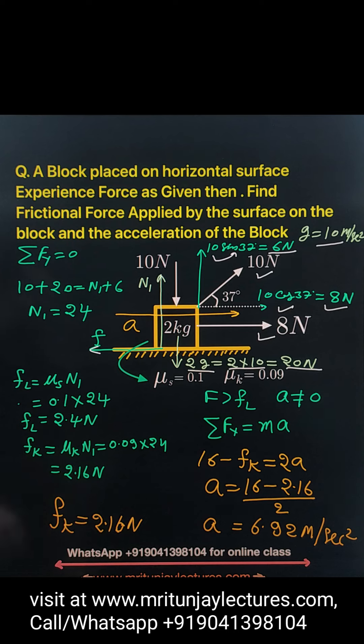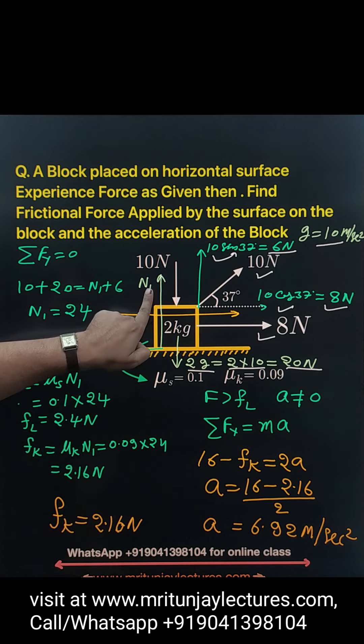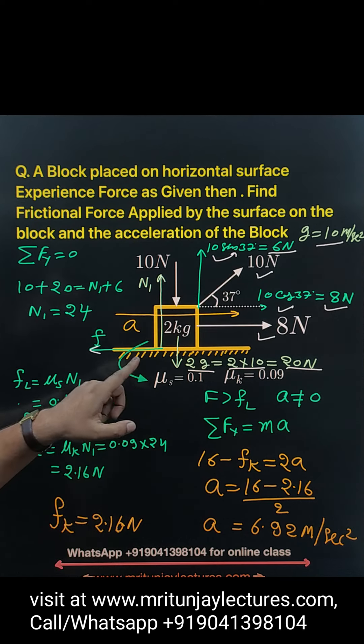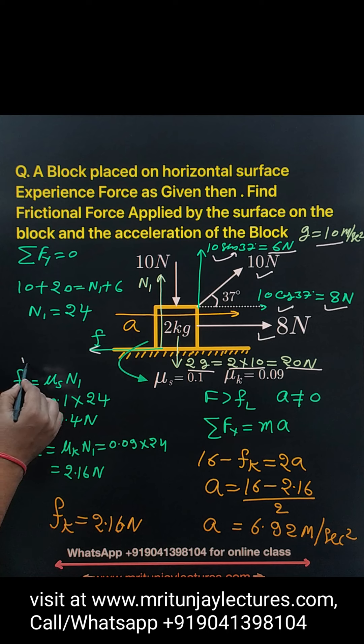Net force on y direction is 0 because this block is not moving in y direction. N1 plus 6 equals 20 plus 10, so N1 is 24 Newton. After that, determine limiting frictional force and kinetic frictional force.